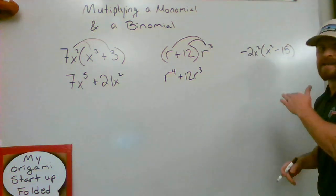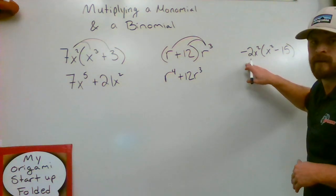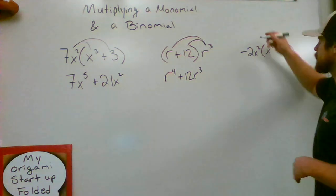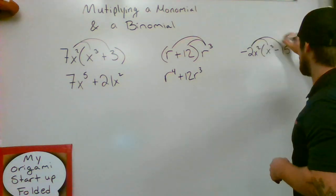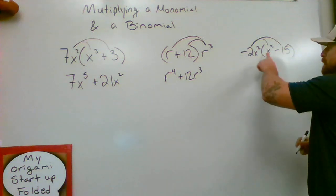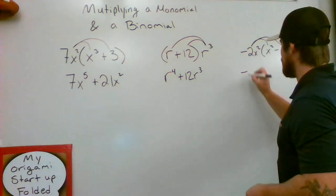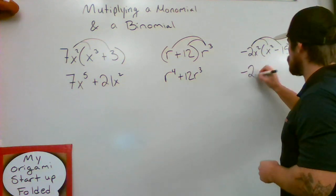Okay. Now, on this last one, we have a negative monomial on the outside. So it is going to change the sign of what we have on the inside. Negative times a positive is going to make a negative result. And 2 is going to stay a 2.